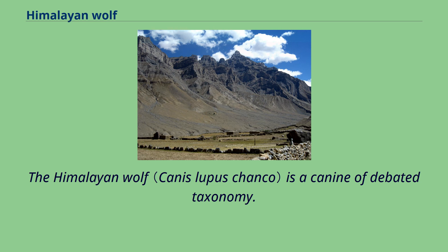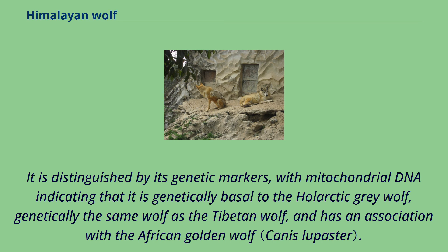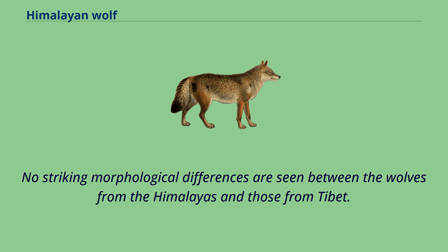The Himalayan wolf is a canine of debated taxonomy. It is distinguished by its genetic markers, with mitochondrial DNA indicating that it is genetically basal to the whole arctic gray wolf, genetically the same wolf as the Tibetan wolf, and has an association with the African golden wolf. No striking morphological differences are seen between the wolves from the Himalayas and those from Tibet.